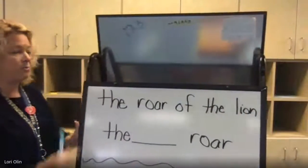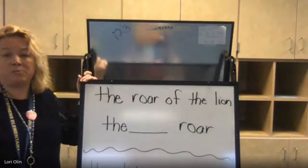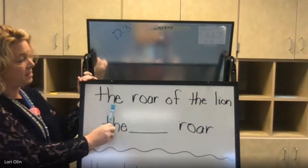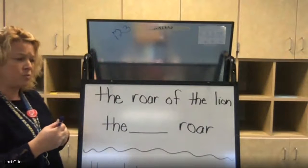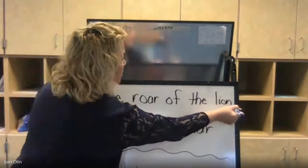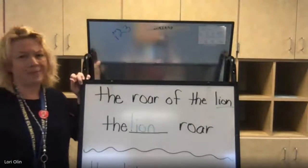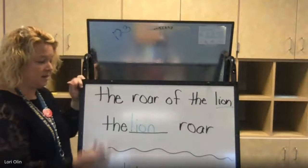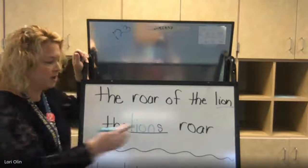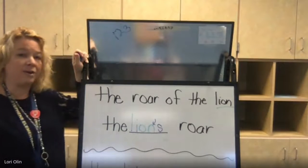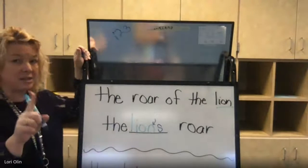This is what we call possessive nouns. It's showing what the noun — the person, place, or thing — who it belongs to. So this sentence says the roar of the lion. Whose roar was it? It's the lion's roar. We're not going to say the lion roar — it's the lion's roar. There's still just one lion, so I need to put my apostrophe or arrow right there to show there's just one lion. The lion's roar — it's still just one lion.